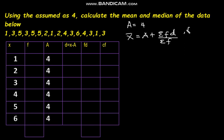Now, what is frequency? A frequency represents the number of times a sample has repeated itself. And the deviation D is the difference between a sample and the assumed mean. Therefore, D is equal to X minus A. We shall use that information to complete our frequency distribution table.